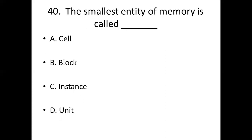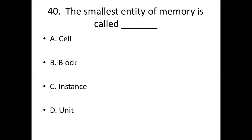Question 40: The smallest entity of memory is called? Option A: cell. Option B: block. Option C: instance. Option D: unit. Answer: Option A — cell.